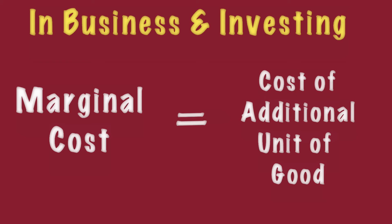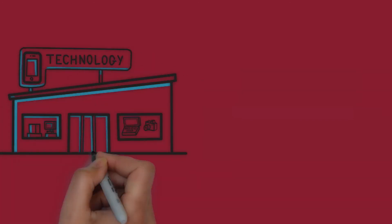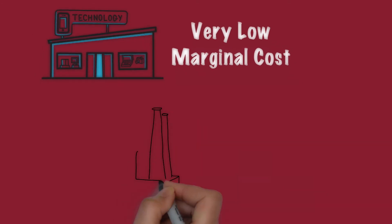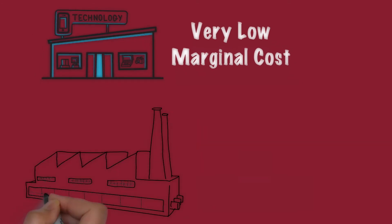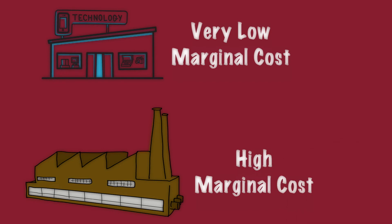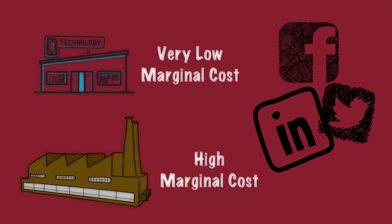The dynamics of marginal cost work differently for different types of businesses. For a software products business, the marginal cost of an extra piece of end product is close to zero. But for a typical brick-and-mortar business which sells physical products, the marginal cost of an additional product is significant. For social networks like Facebook, Twitter, or LinkedIn, the marginal cost of signing up one more additional member is close to zero, but each new member brings non-zero value to the entire network.